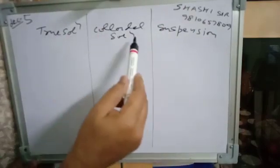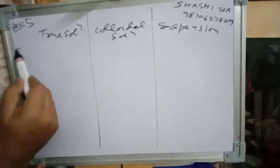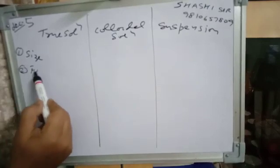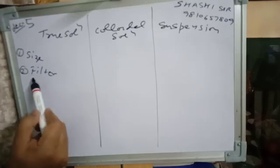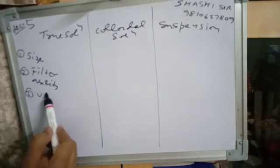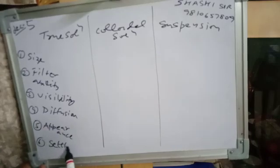We will now differentiate between the three types — true solution, colloidal solution, and suspension — on the basis of size, filterability, visibility, diffusion, appearance, and settling.